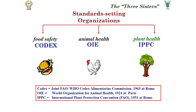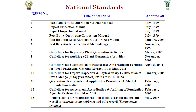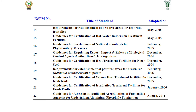We discussed the regulations — different international regulations — especially the standards framed by the International Plant Protection Convention to monitor the movement of germplasm across the world, and what India has done through 22 national standards to regulate germplasm exchange, as well as the importance of the Plant Quarantine Order 2003.